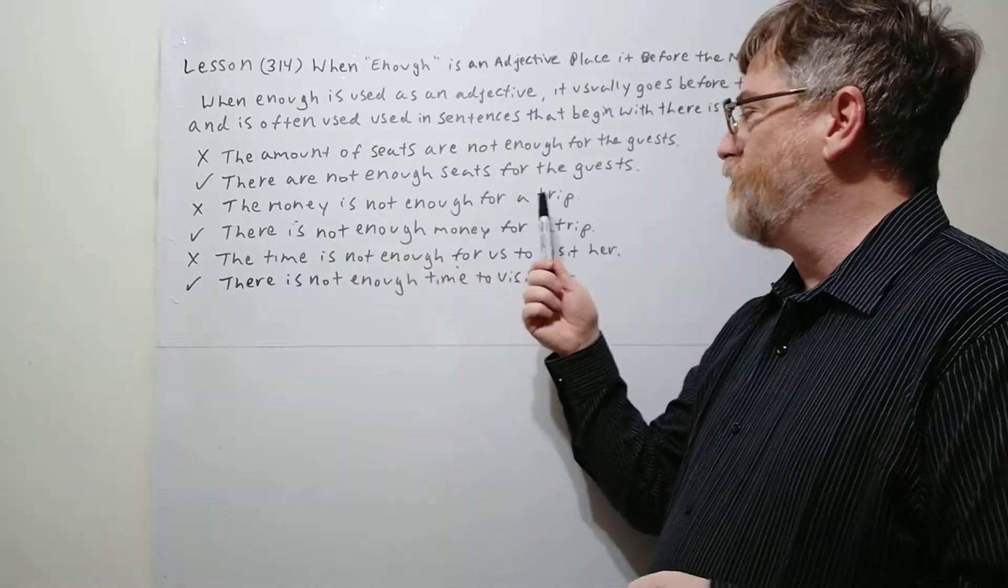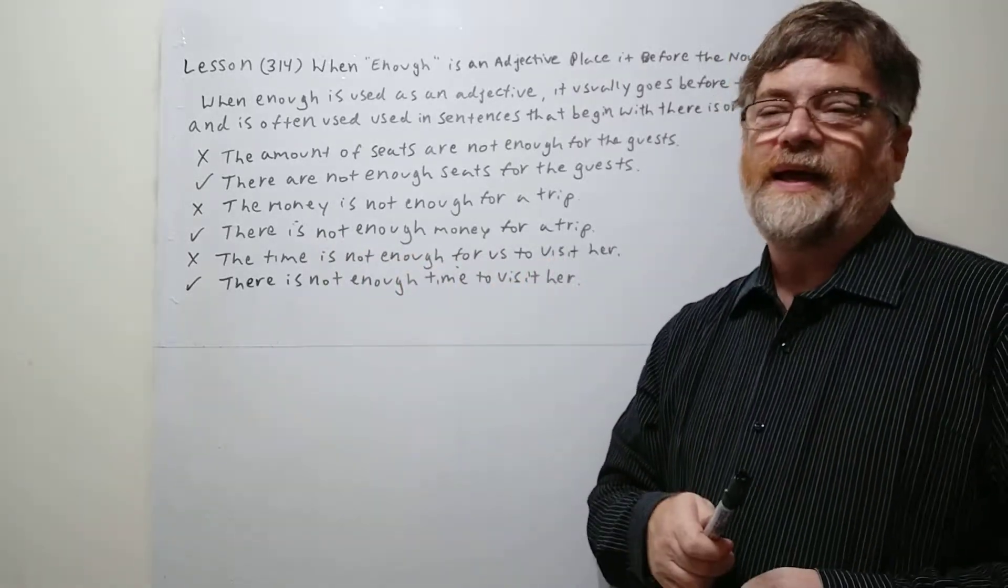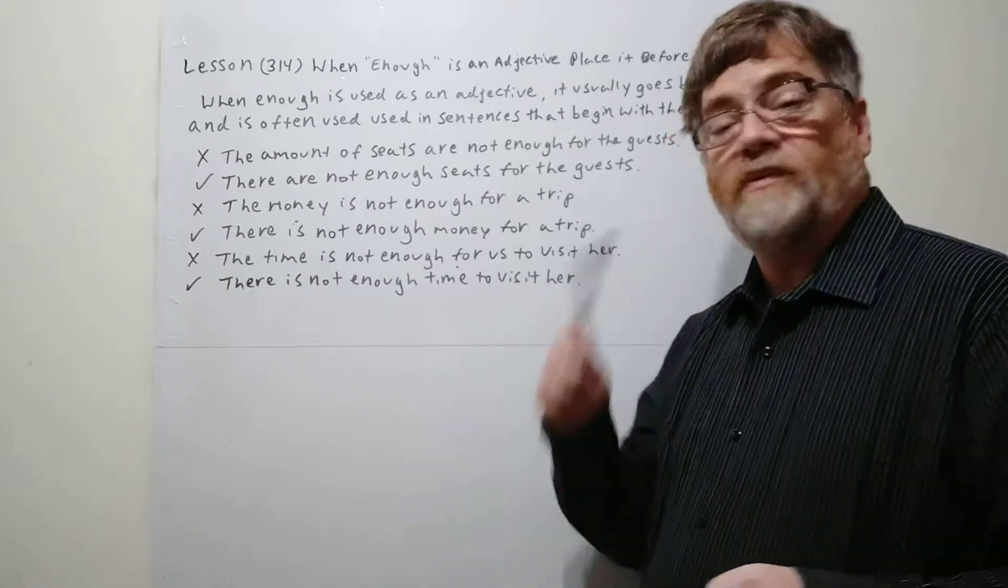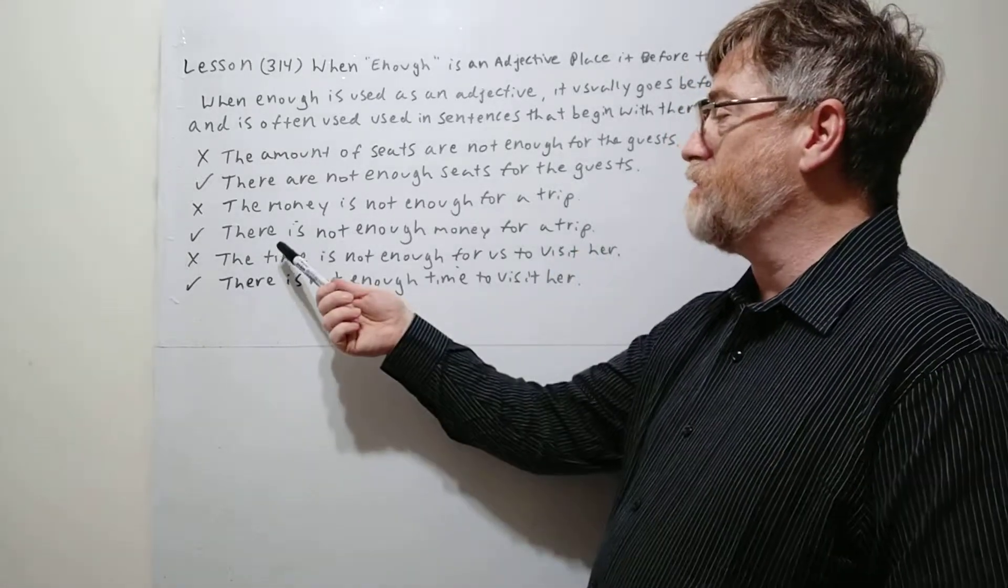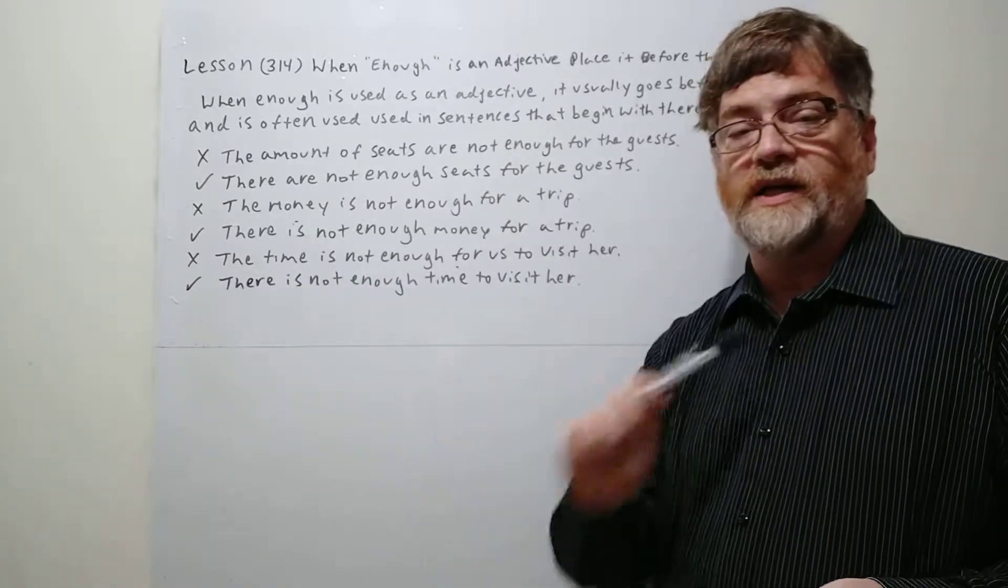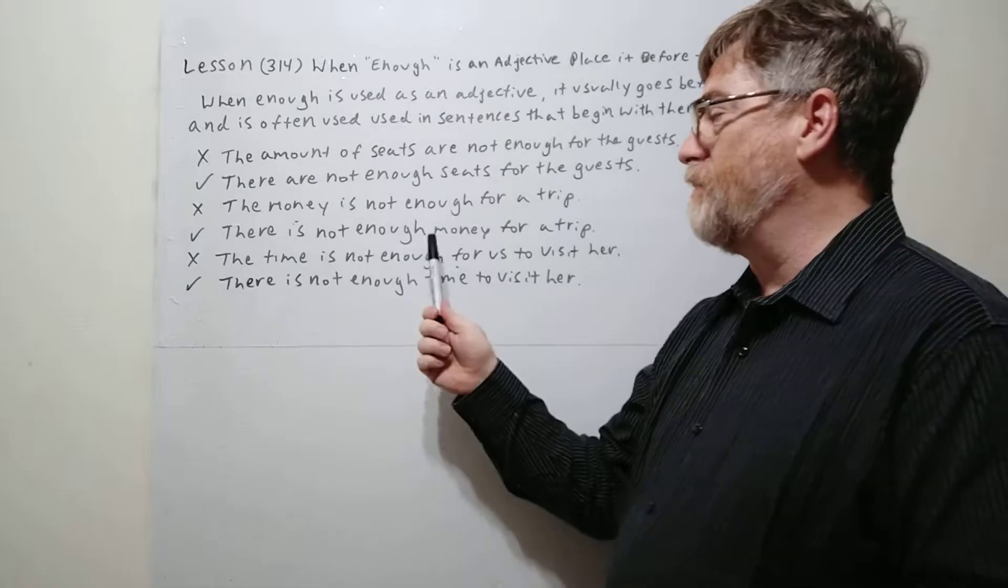The money is not enough for a trip. I don't know. You know, sometimes in an awkward way we're thinking it might come out this way. But it's much better to say there's not enough money for a trip. Very clear. Very concise. Very short. That's the better way to say it.